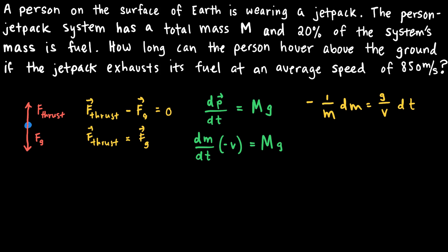The next step is to integrate both sides. On the left-hand side, I'll keep the minus sign outside the integral and have the integral of 1 over m dm. On the right-hand side, g and v are constants so they stay outside, and I integrate dt. I need to determine the limits of integration. On the right-hand side, I start at time 0 and end at time t, representing the total hovering time of the person-jetpack system.